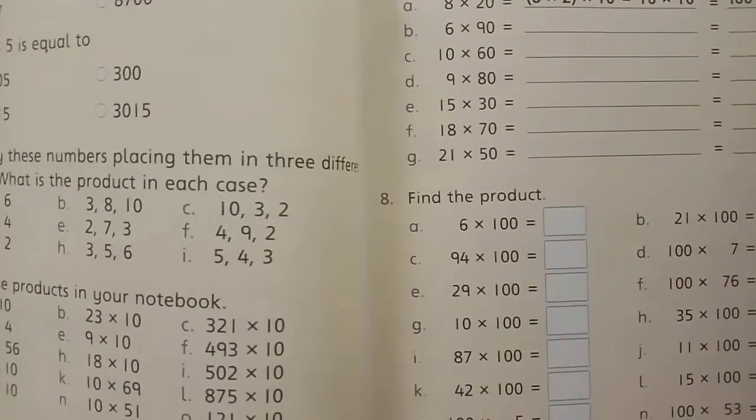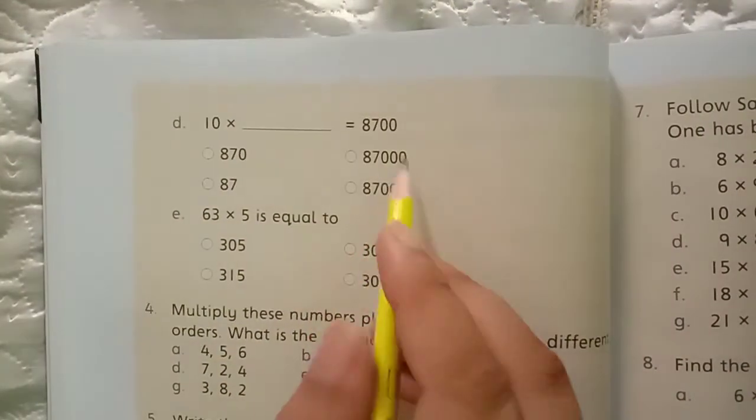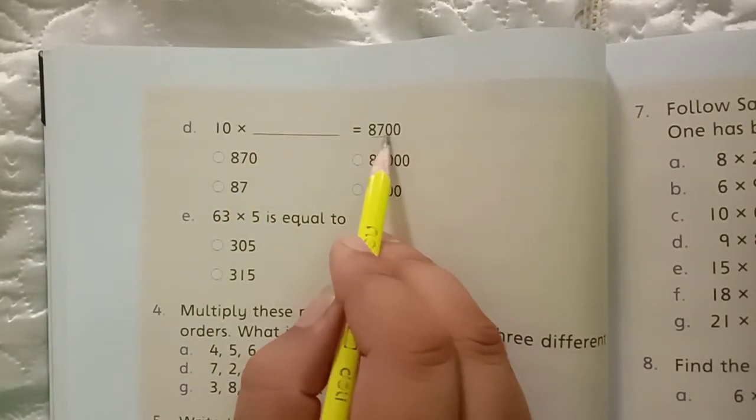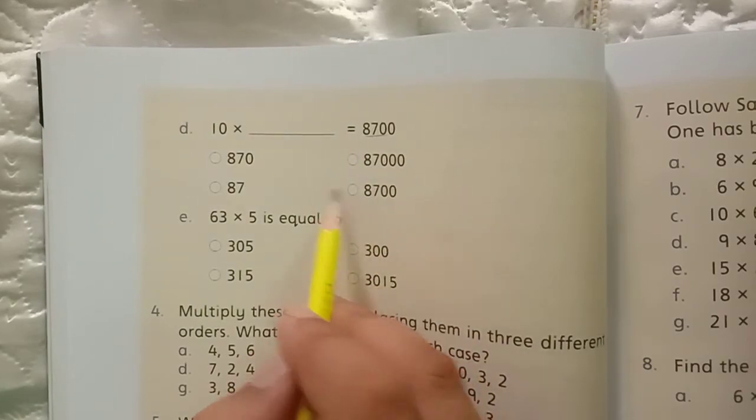D: 10 times 870. We have options, so 870 is here. We have to select this one.